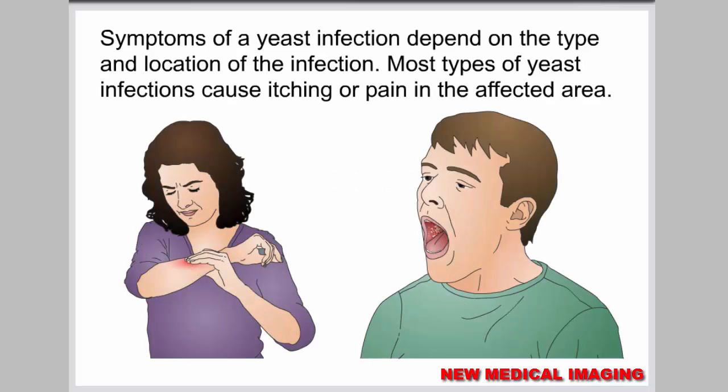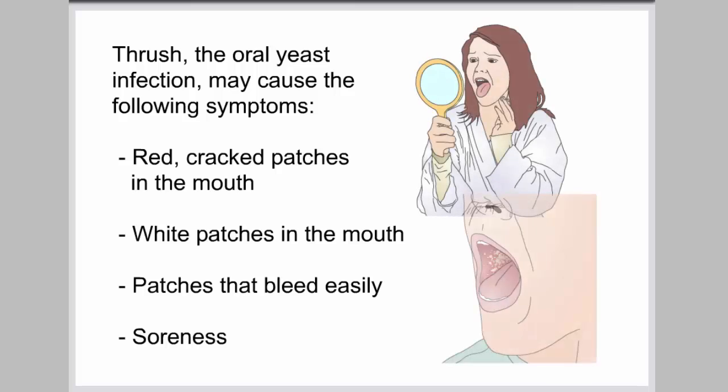Symptoms of a yeast infection depend on the type and location of the infection. Most types of yeast infections cause itching or pain in the affected area. Thrush, the oral yeast infection, may cause the following symptoms: red, cracked patches in the mouth; white patches in the mouth; patches that bleed easily; and soreness.